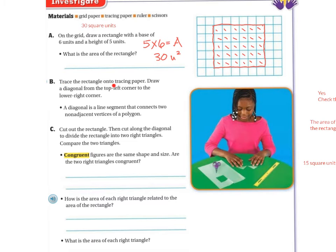Now, B says to trace the rectangle onto tracing paper and draw a diagonal from the top left corner to the lower right corner. So they want you to, and I'm just going to do it on here. So they want you to draw a diagonal line across.